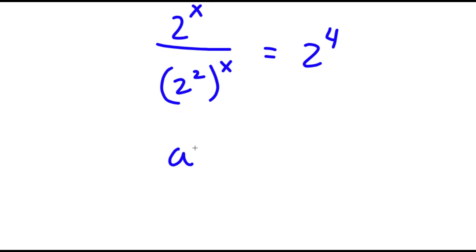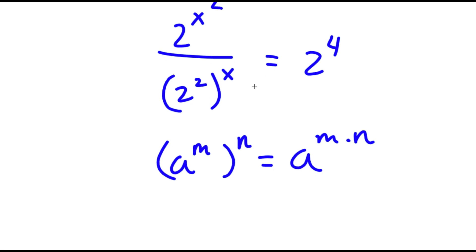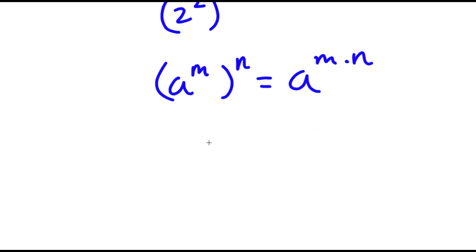Now if I have something in the form a to the power of m to the power of n, this is equal to a to the power of m times n. So 2 to the power of 2 to the power of x equals 2 to the power of 2 times x, which is 2x. So now I have 2 to the power of x squared over 2 to the power of 2x.